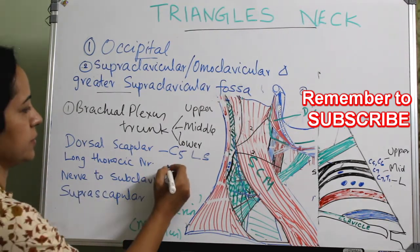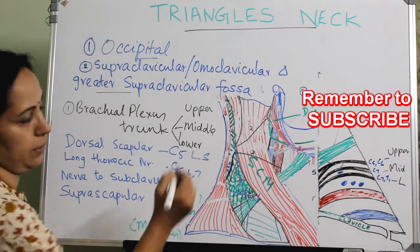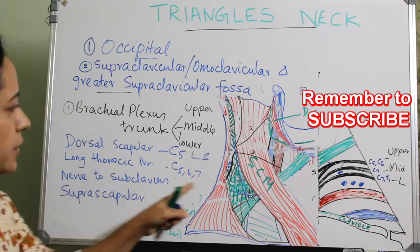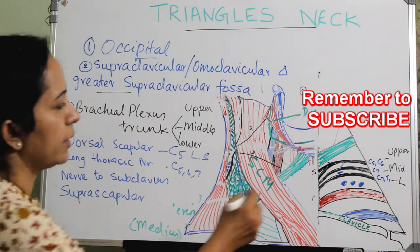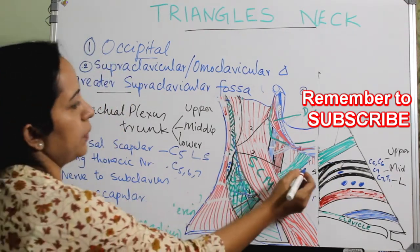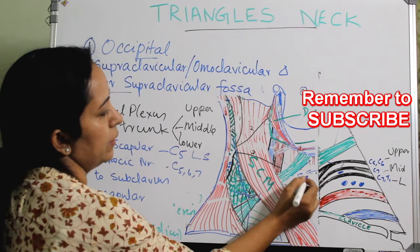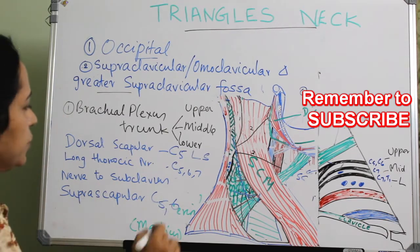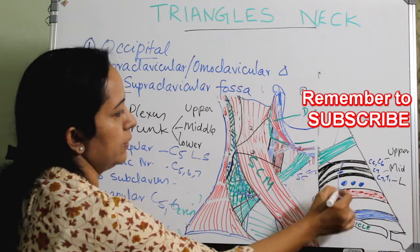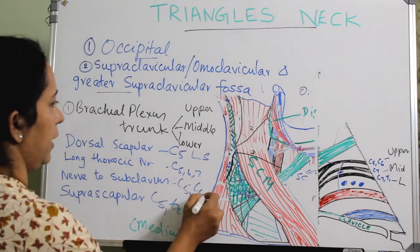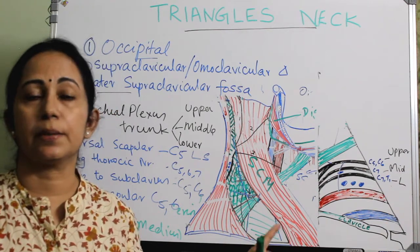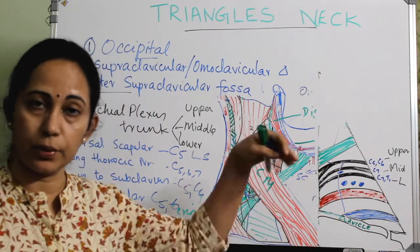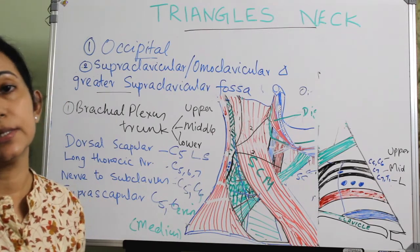The long thoracic nerve arises from C5, C6, and C7 nerve roots and travels downward. The suprascapular nerve arises from C5 and C6. The nerve to subclavius also arises from C5 and C6, travels downward, and supplies the subclavius muscle, passing near the subclavian artery and vein.